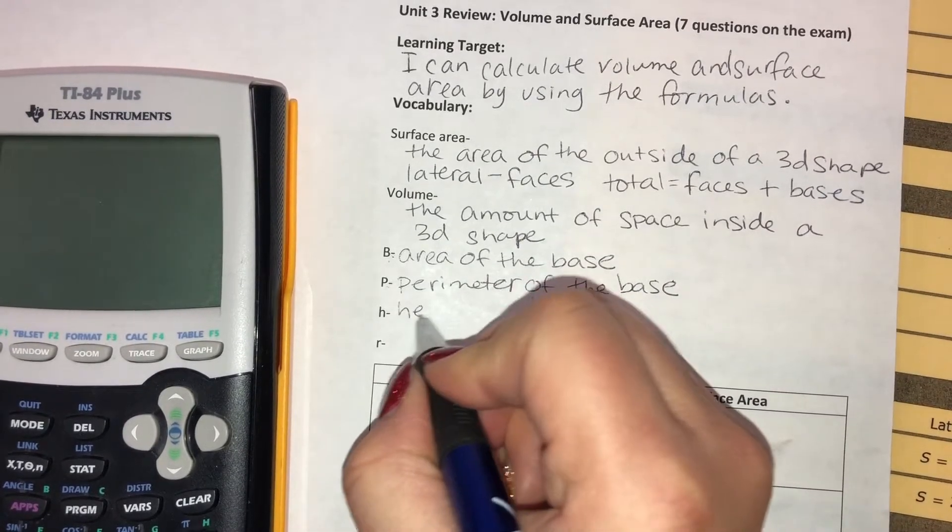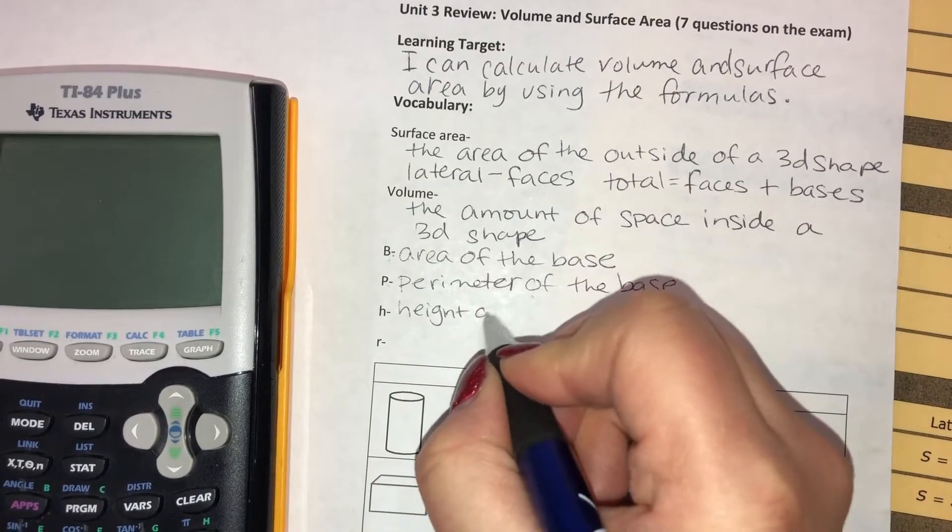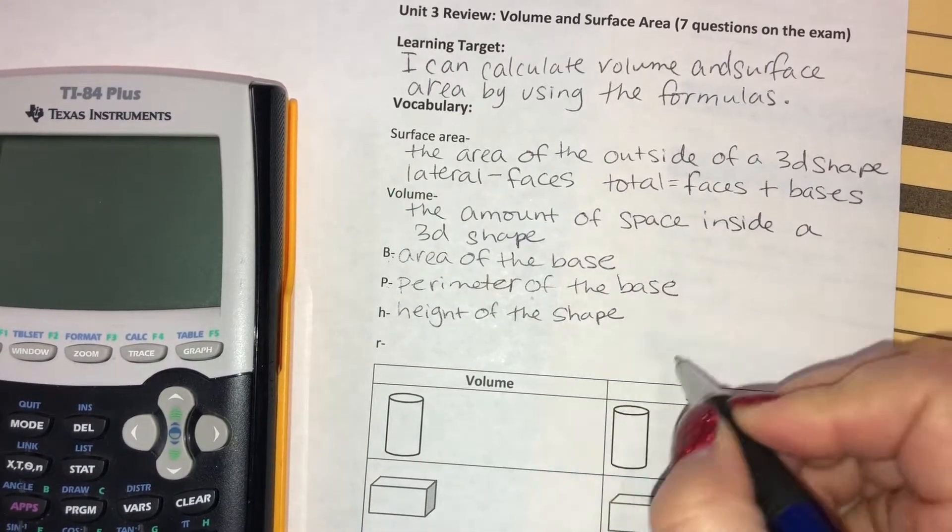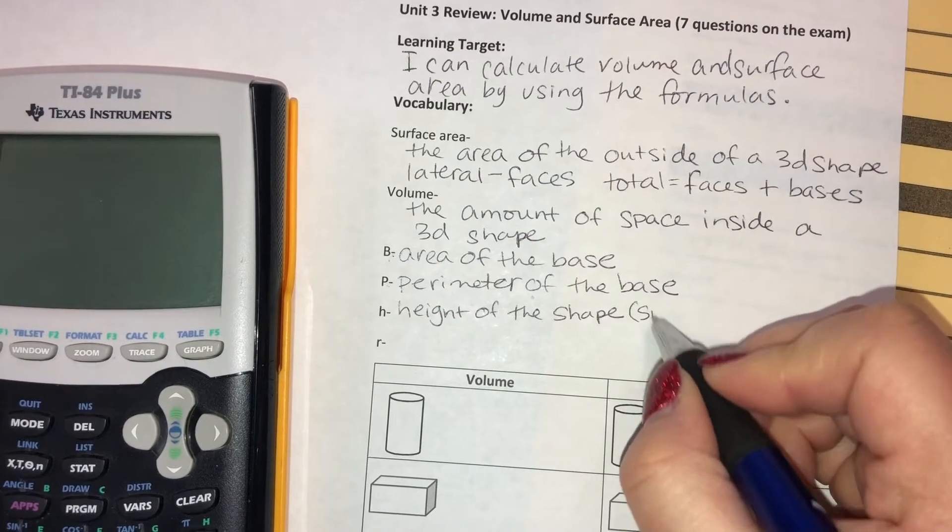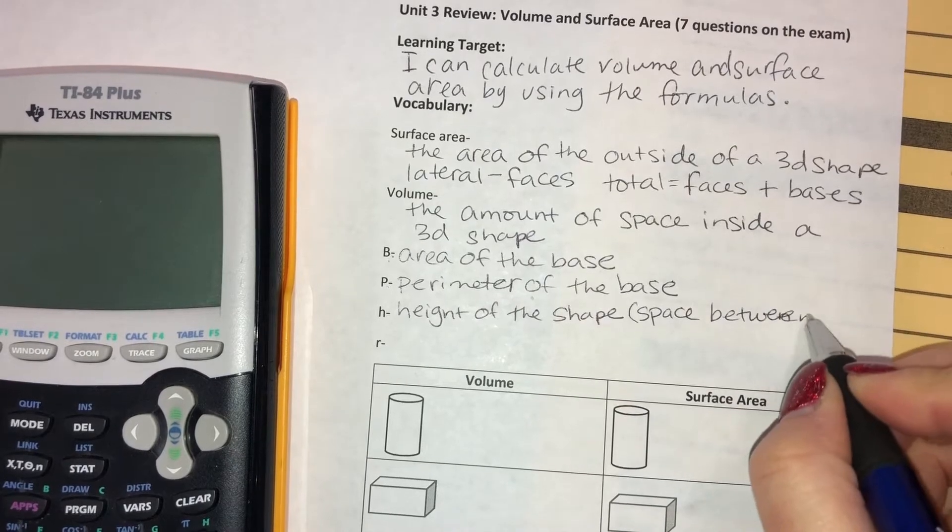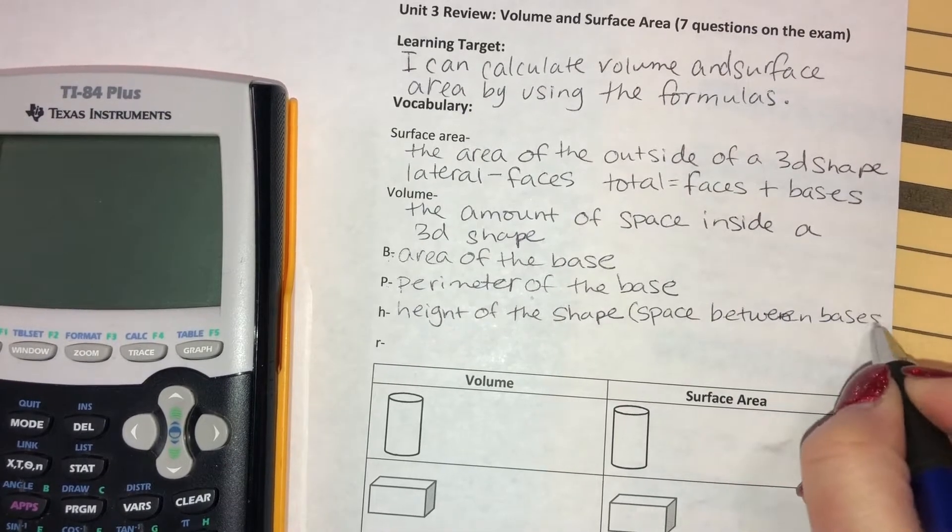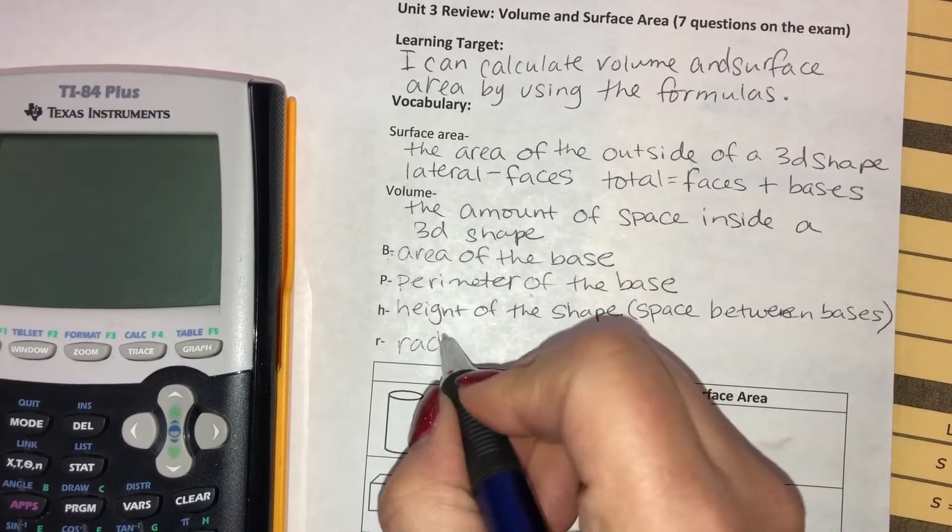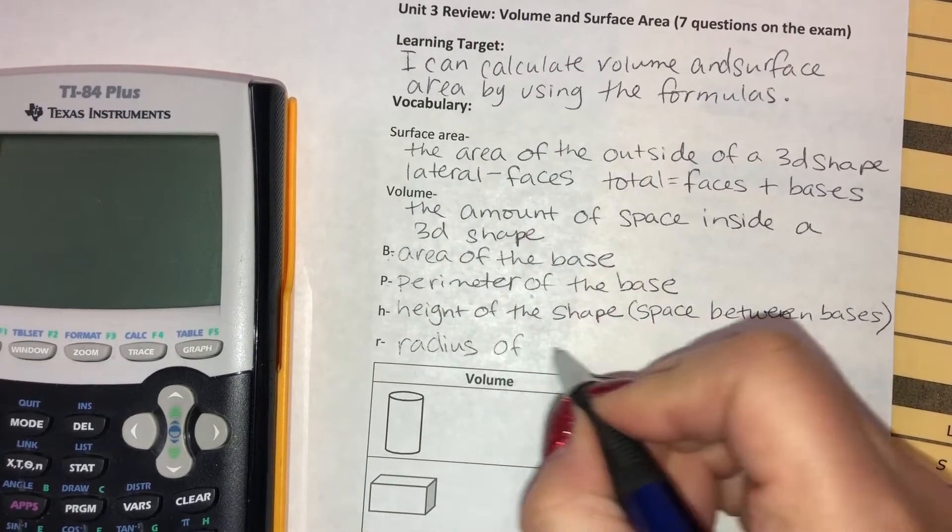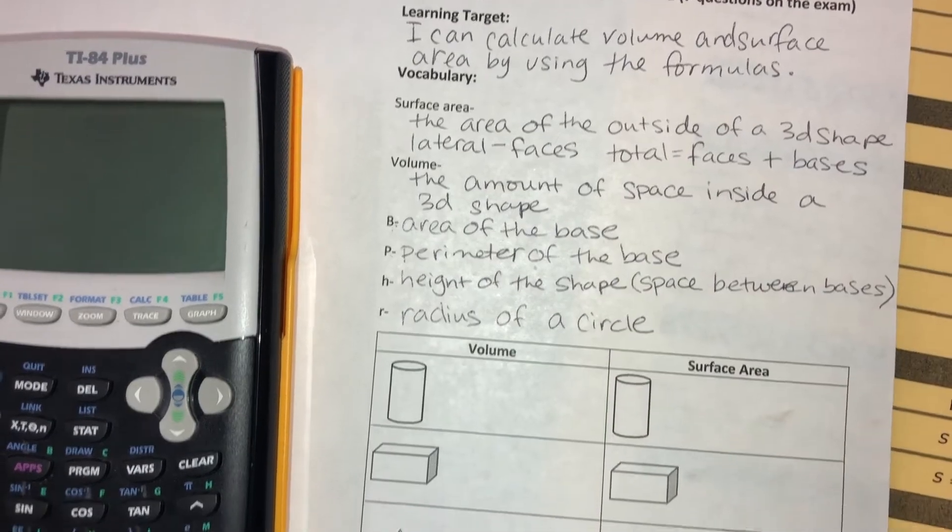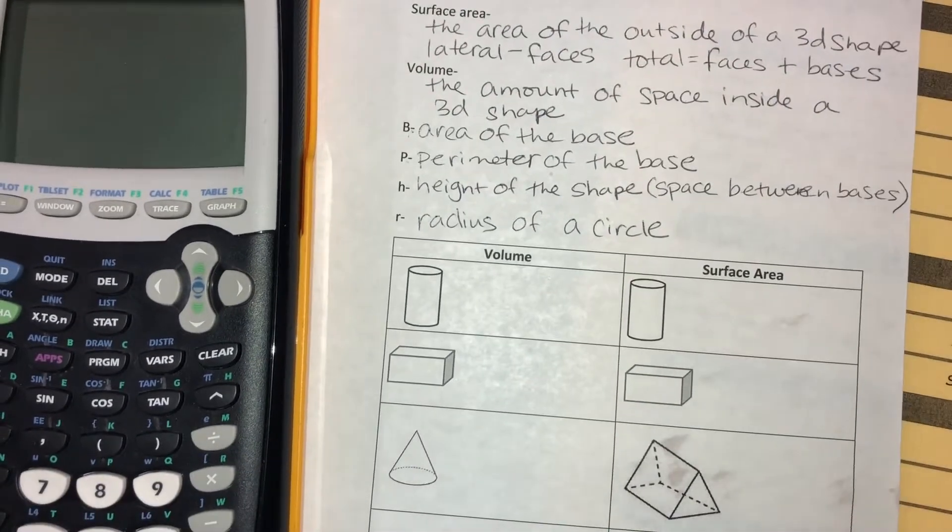H stands for height of the shape. And if you're not sure which one is the height, it's the space or the distance between the bases. And then R stands for the radius of a circle, when you're doing cylinders or spheres or cones.